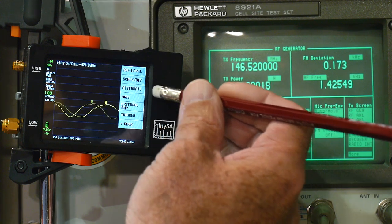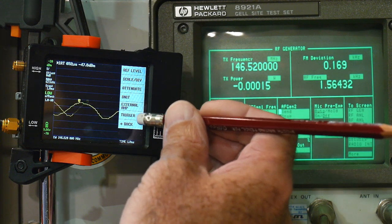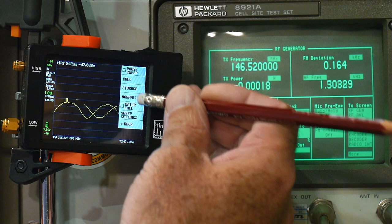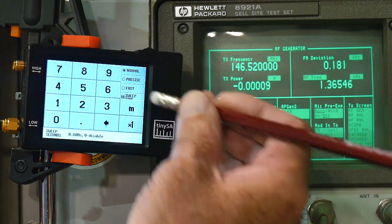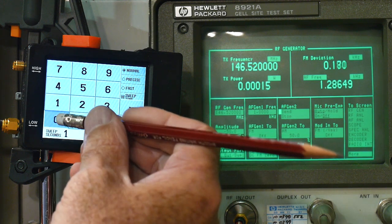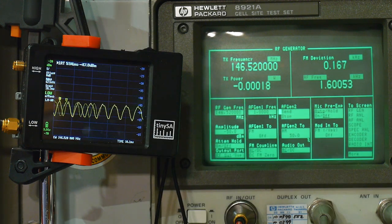Now it's moved up. Now we want to change the horizontal sweep time, which is in display, sweep settings, sweep time. Let's say 10 milliseconds. And there we go.